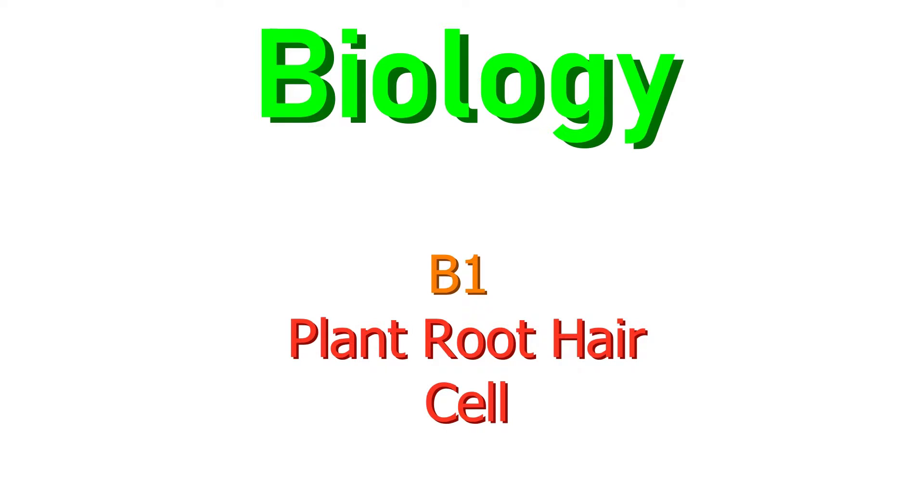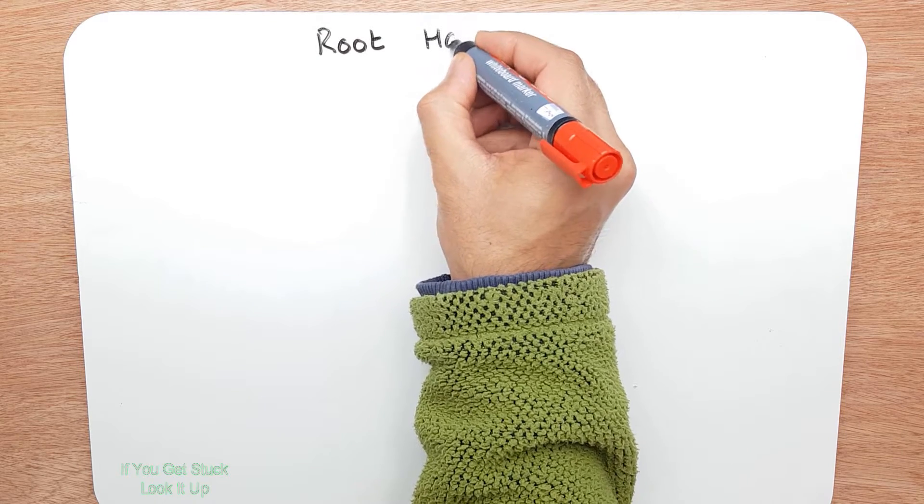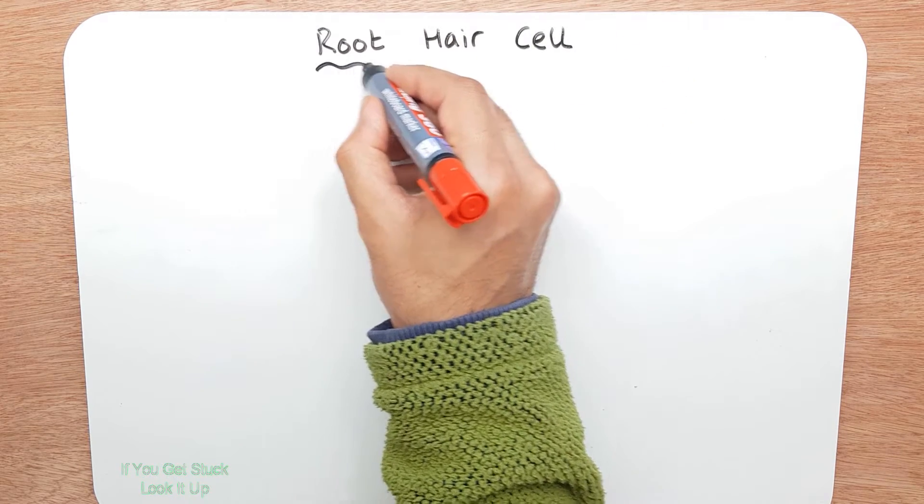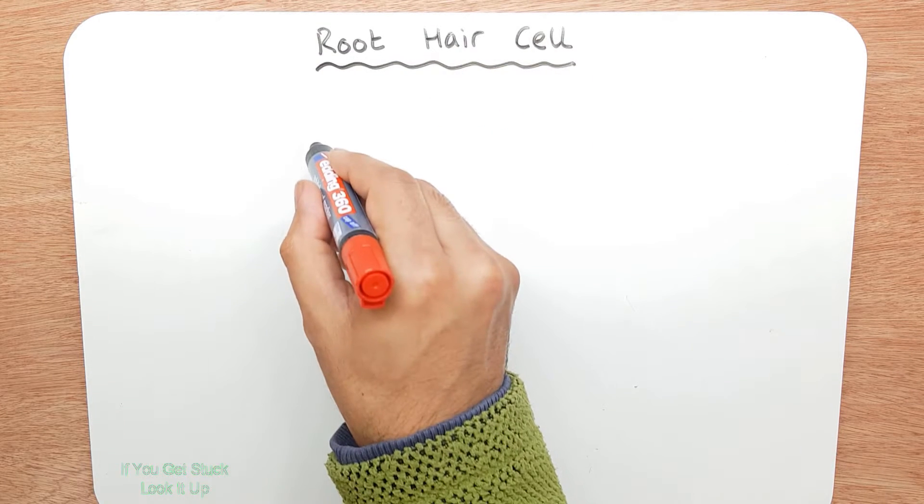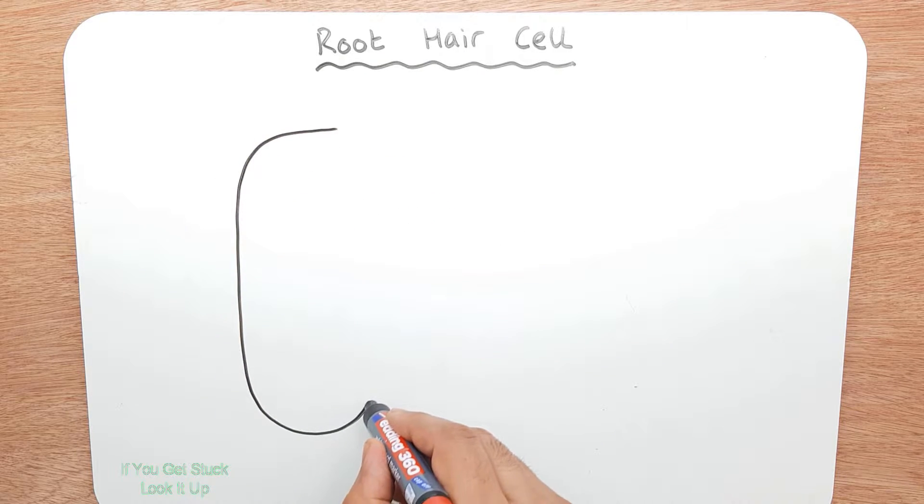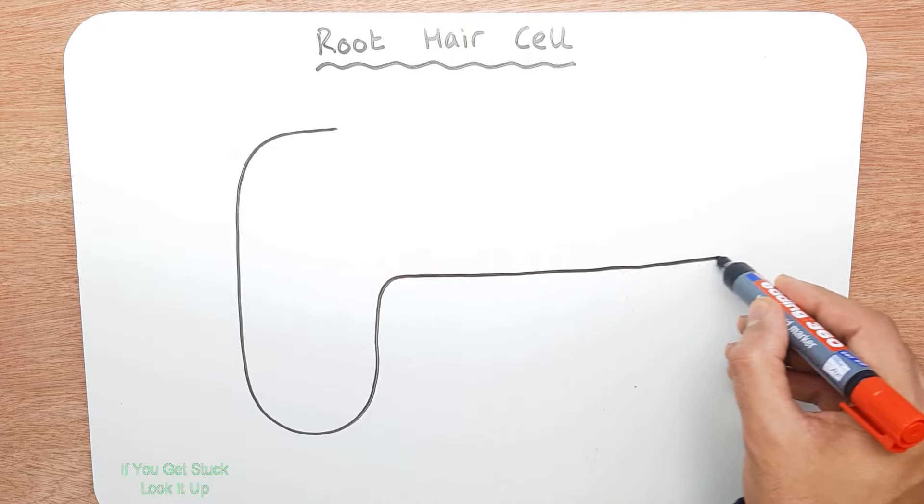We now want to look at the root hair cell. And there's a few things you need to remember. That's your shape. So there's the main body, and you've got this long projection.